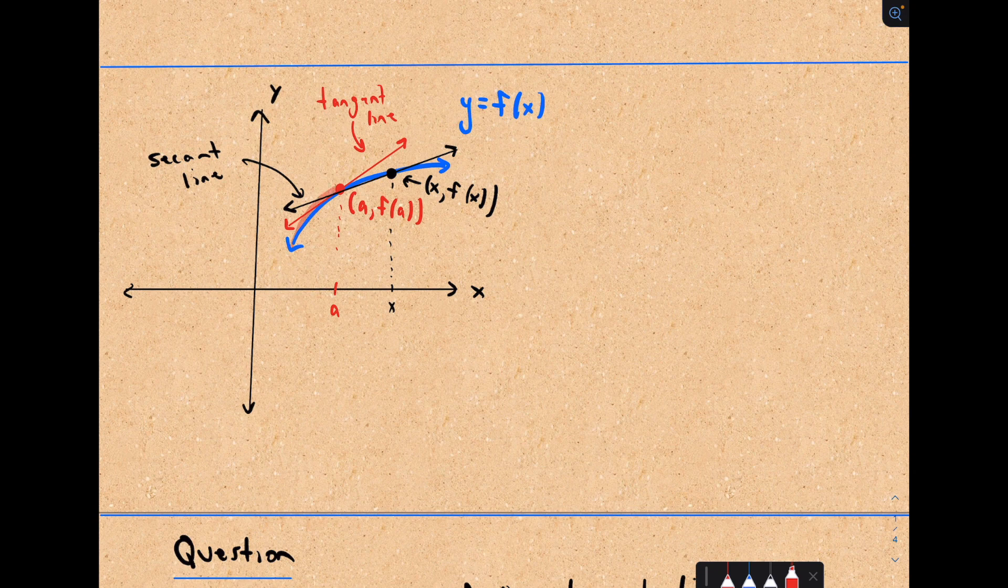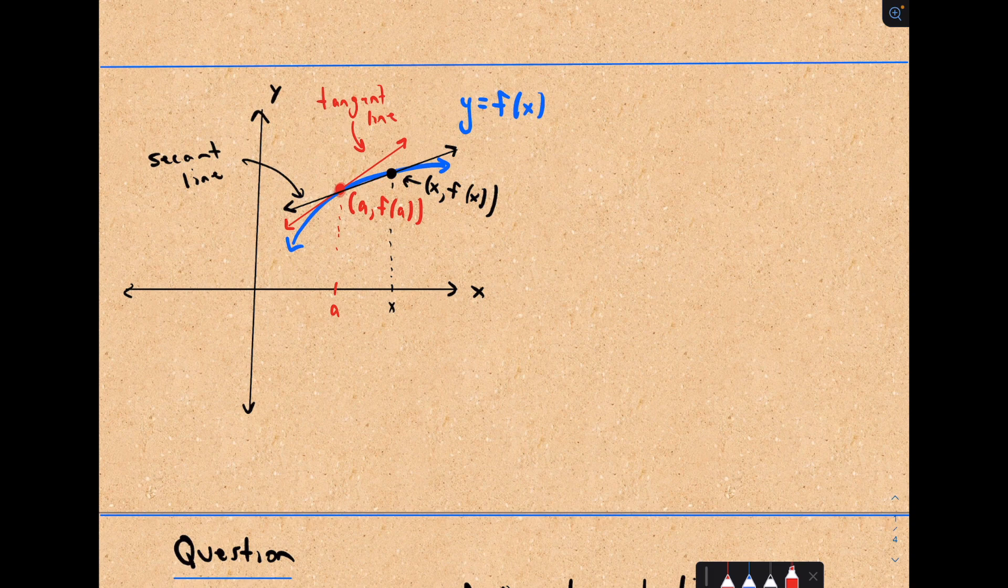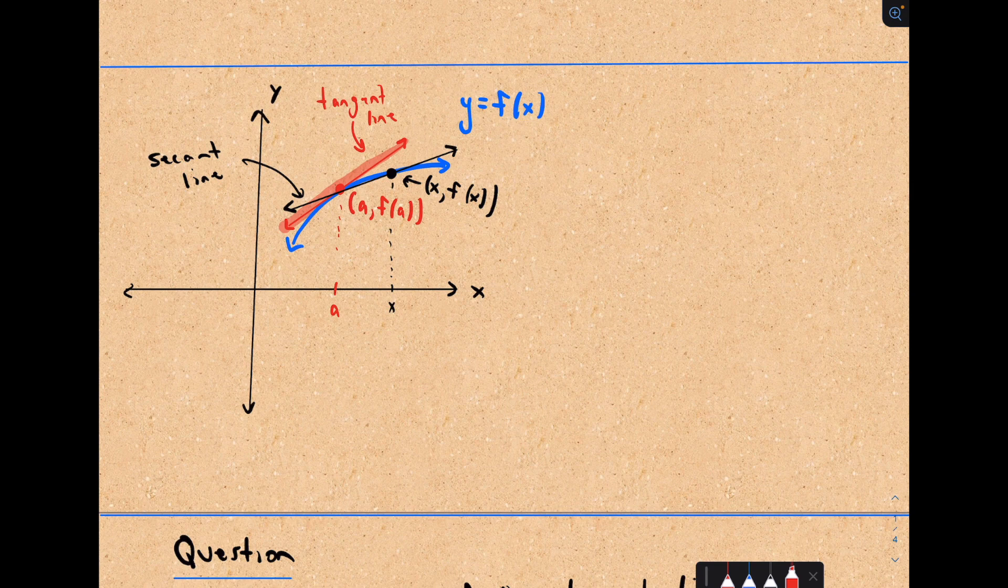So I've got my function here, y equals f of x, my little blue curvy function. The idea is we take some point on our curve. Here I've got the x-coordinate of a. I would have the corresponding y-coordinate f of a. I'm interested in finding the slope of a tangent line.